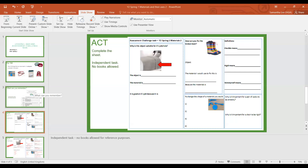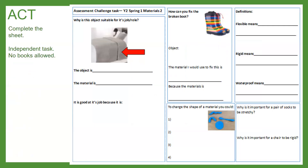This is your assessment challenge task — your ACT — for this half term. What we would like you to do is complete the sheet with your answers. You will find this sheet on Purple Mash as an additional task, and remember this is independent. There are a couple of sections to complete based on some clues in the pictures or questions, and there's a variety of different things we want you to do. We're going to work our way through it together now.